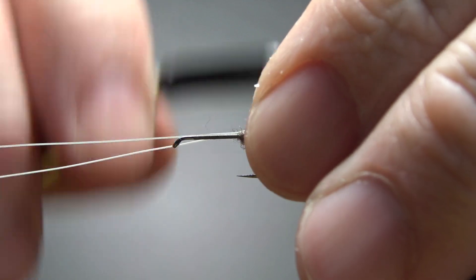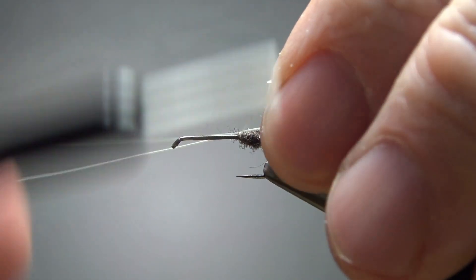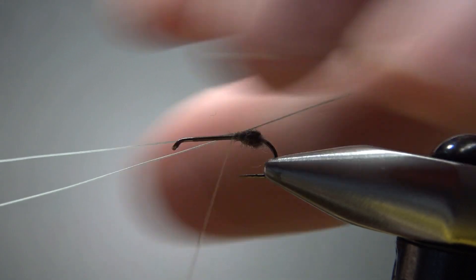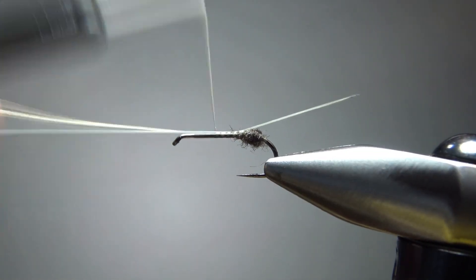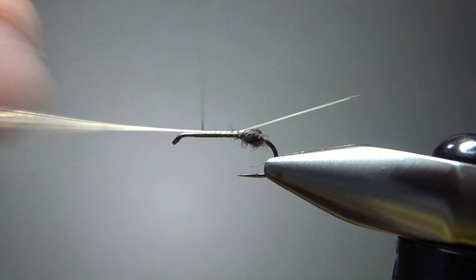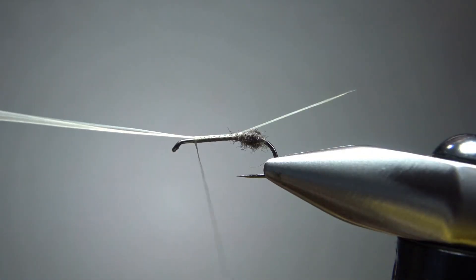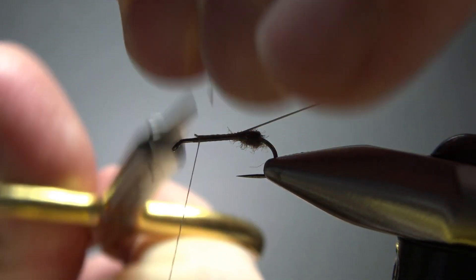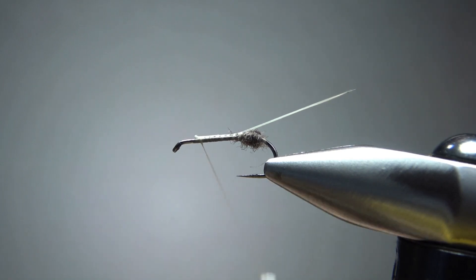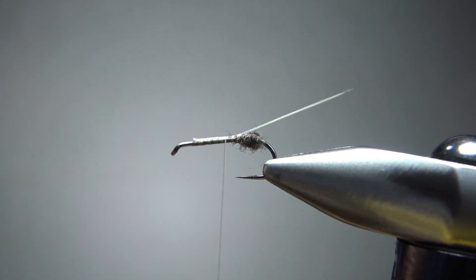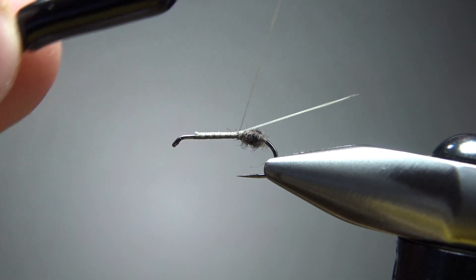A little pinch wrap right there. And don't worry if they flare up on you. We'll take care of that in just a second. But before that I'm going to go ahead and some loose wraps just to bury this right here. So we'll keep it from spinning around the hook on me through the rest of the fly.